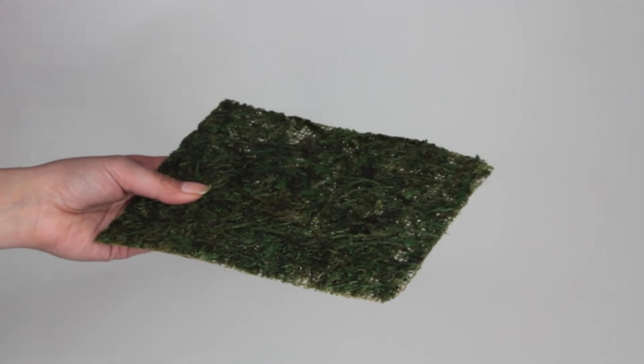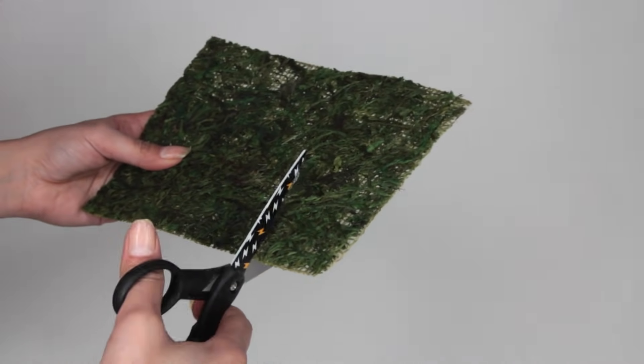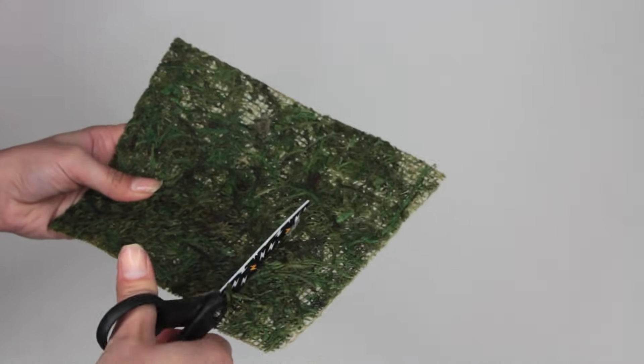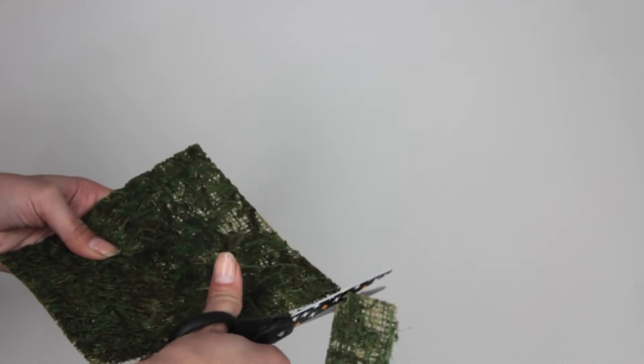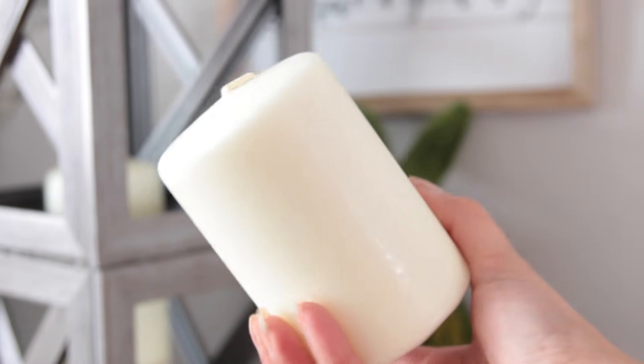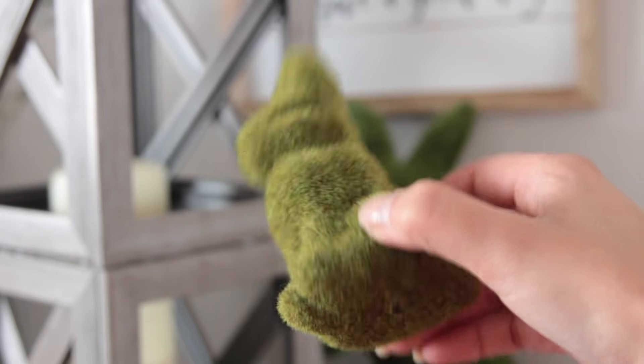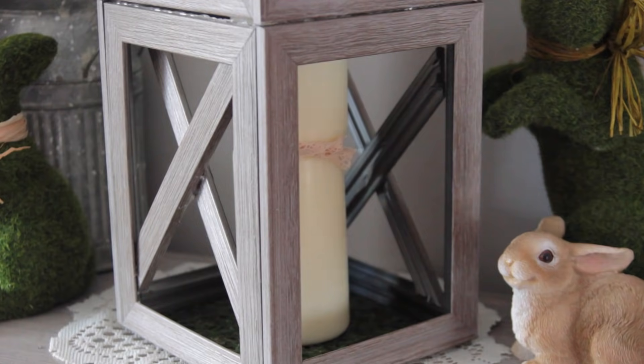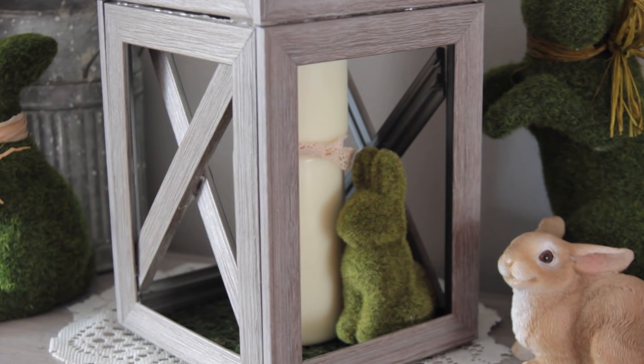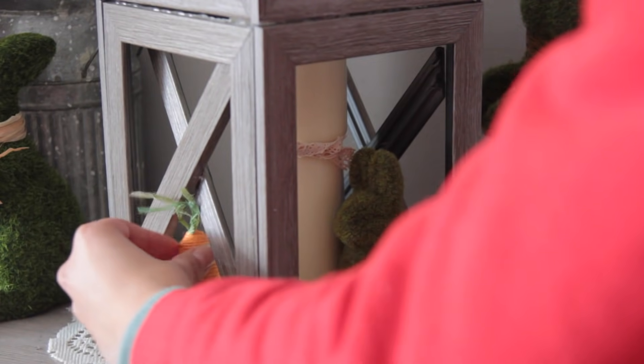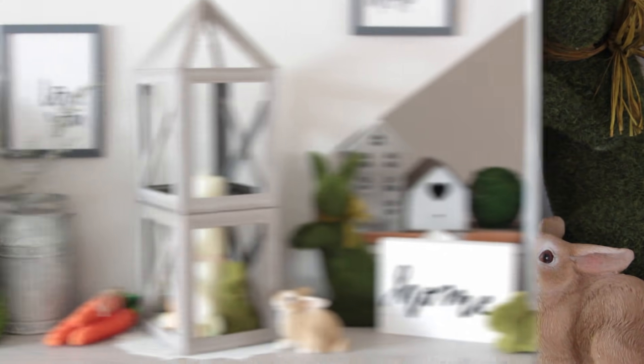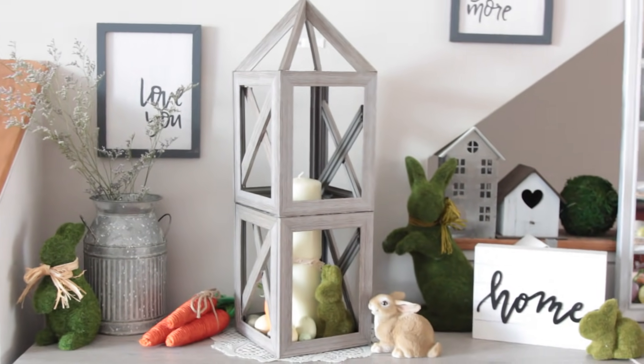Now you can put whatever you want inside of your lantern. I added some of the moss sheets from Dollar Tree. I cut one down. I just placed that on the bottom of the lantern. And then I put a candle inside of there. I put this small little green rabbit that I got at Hobby Lobby. It was actually on a pick. I took it off the pick and stuck it in there. I put some eggs and then some carrots from Dollar Tree. And that's it for the lantern. I love this thing because it's really tall.